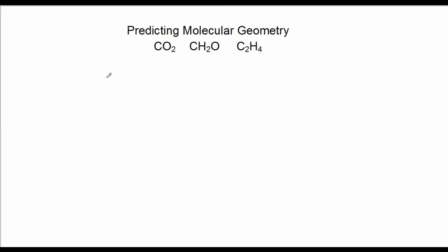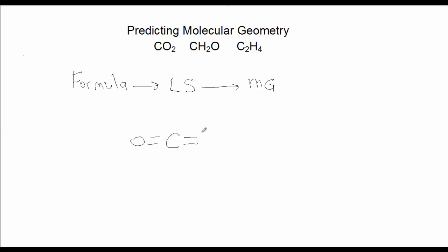Now I'd like to show you a way of predicting molecular geometry. First, start off with a formula. From the formula, draw the Lewis structure. Then, with references in your book and examining the Lewis structure, you can predict the molecular geometry. Let's start off with CO2. Carbon is the central atom in CO2, with two oxygens at either end. Examine the Lewis structure with reference to the central atom, carbon, and count the number of regions of electron density around the central atom — in this case there are two regions of electron density around the carbon.